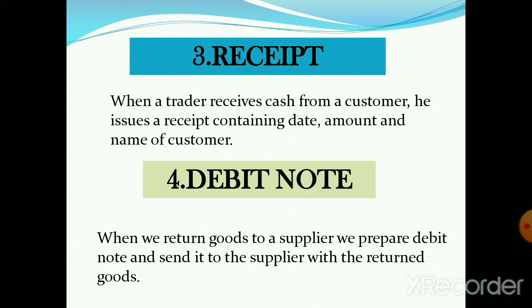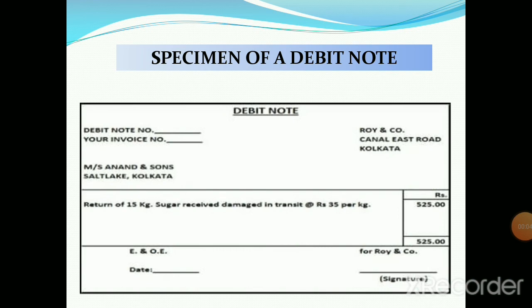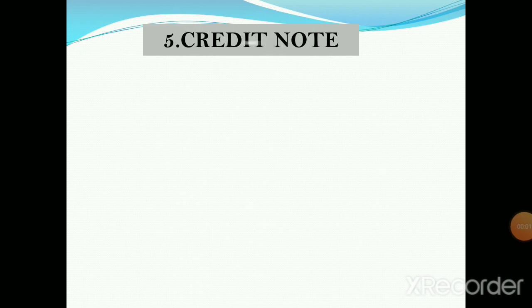Next is debit note. When we return goods to a supplier, we prepare a debit note and send it to the supplier along with the returned goods. A debit note is a document which indicates that the supplier's account is being debited. When a customer returns goods to the supplier, the supplier has to pay back the money, so there is an outflow of cash from the supplier's account. The specimen of a debit note contains the debit note number, invoice number, name and address of the company, name and address of the person to whom it is sent, date of transaction, name of account debited, amount, and reason for debit.